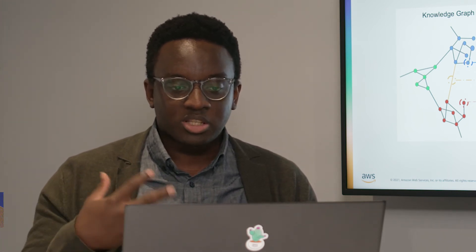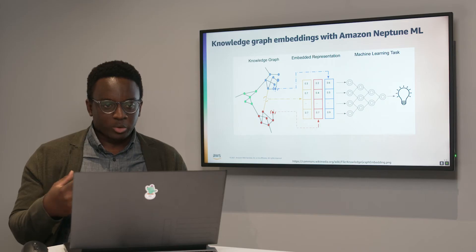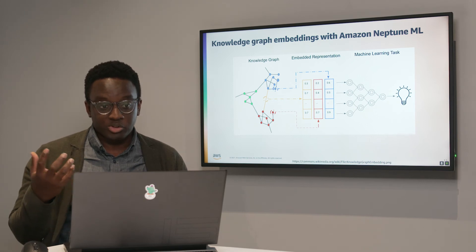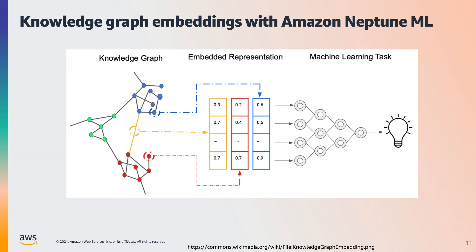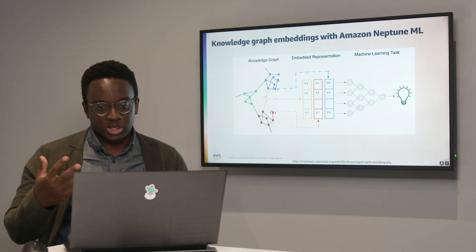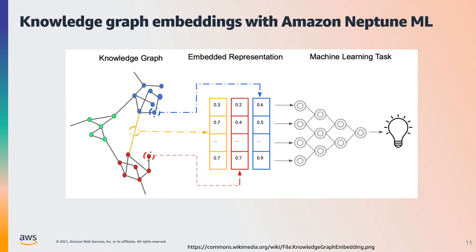Thanks, Pri. I'm going to talk about how we can use knowledge graph embeddings to power downstream machine learning tasks like search and relevance, especially a use case called out-of-catalog search. Knowledge graph embeddings are a way to transform the nodes and entities in the knowledge graph, as well as the relationships between those entities, into a numerical representation — specifically, a point in n-dimensional space. So each node or relationship is embedded in n-dimensional space, hence the term knowledge graph embedding.